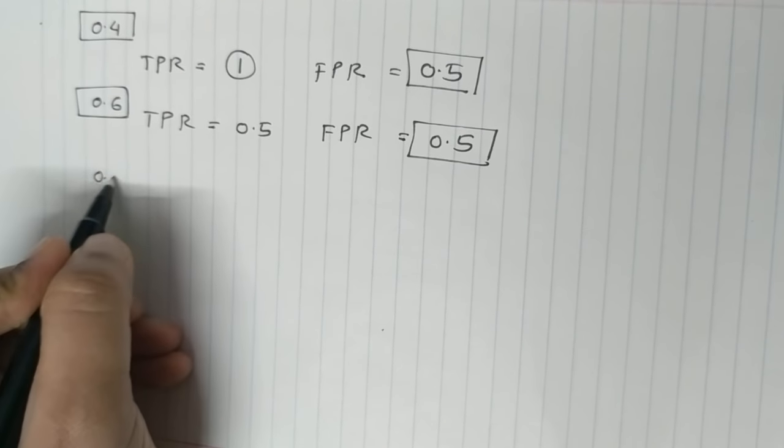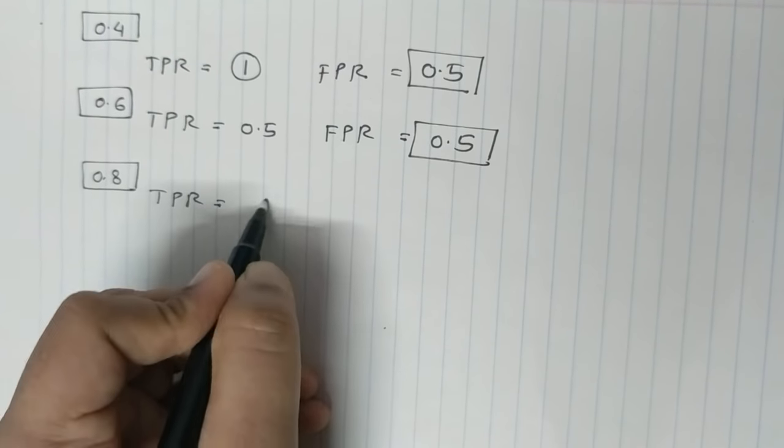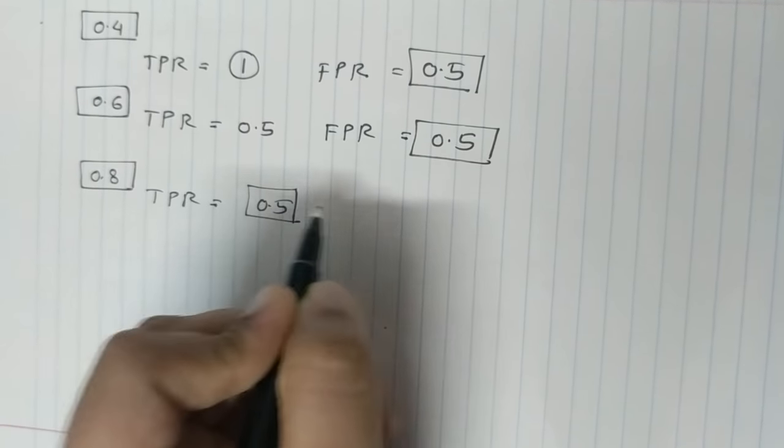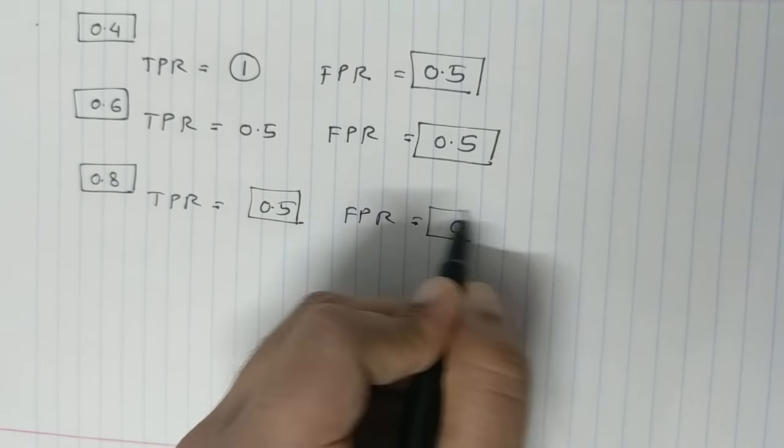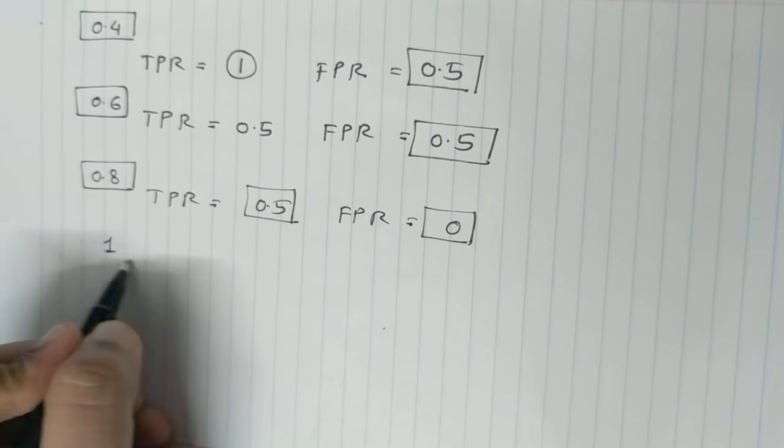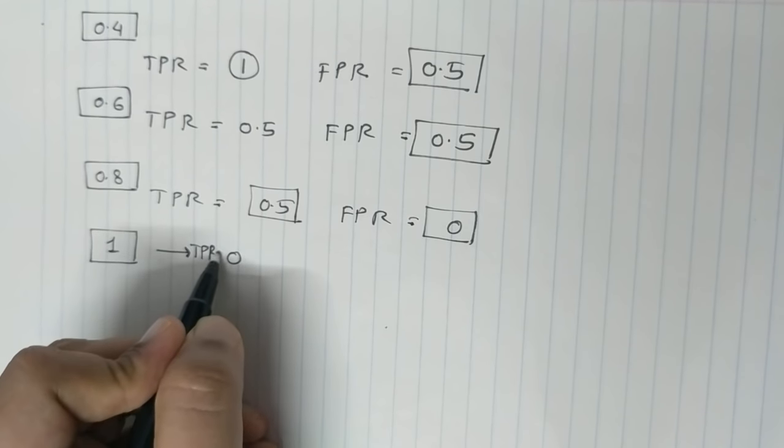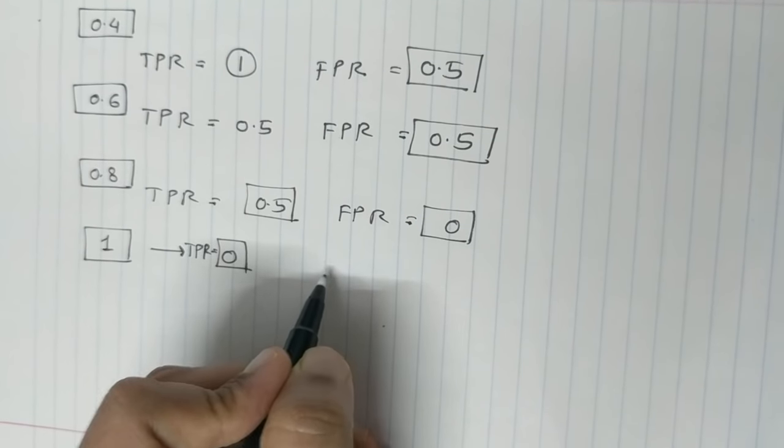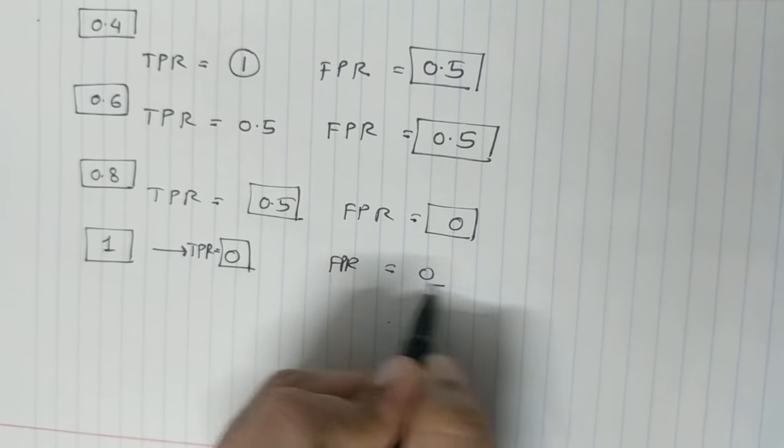At 0.8, we get a TPR of 0.5. And similarly, at 1, you will get a TPR of 0 and FPR of 0 again.